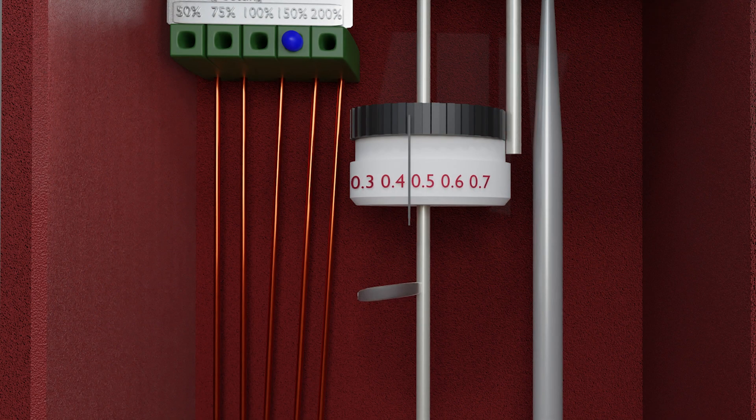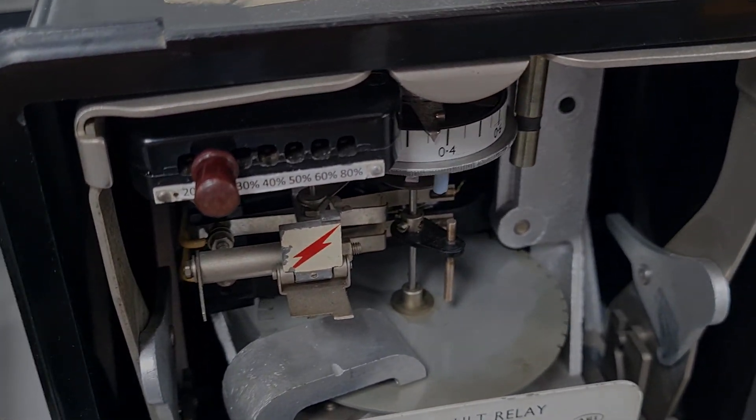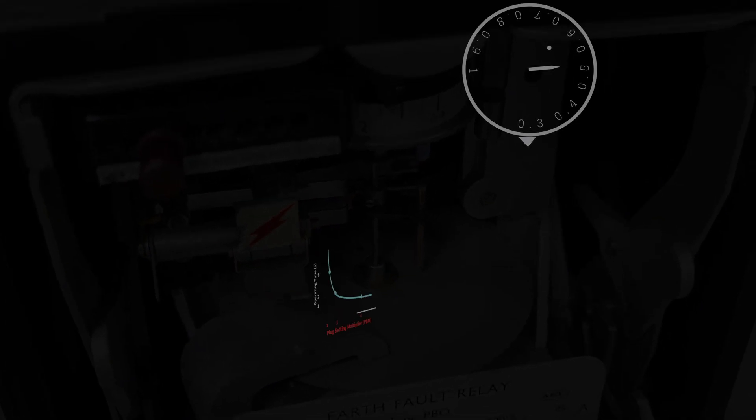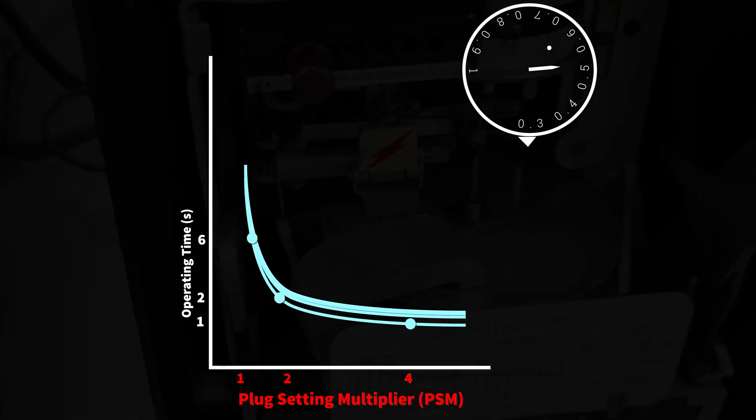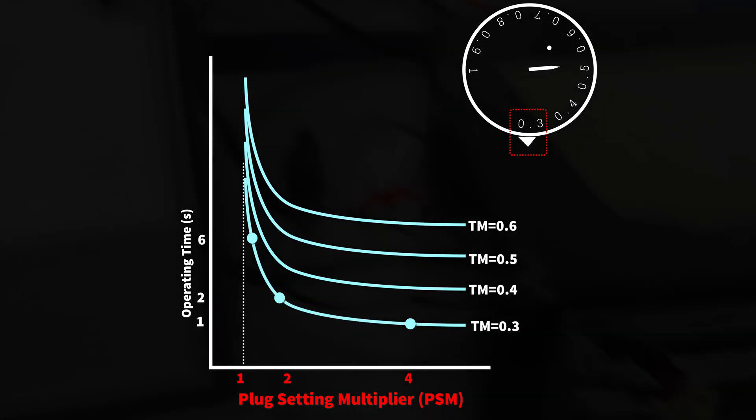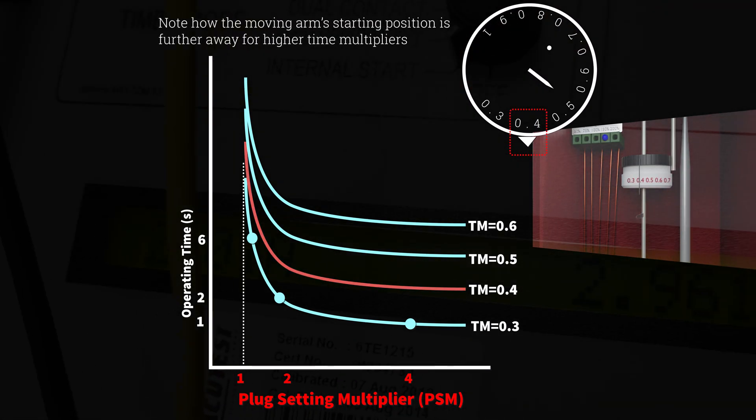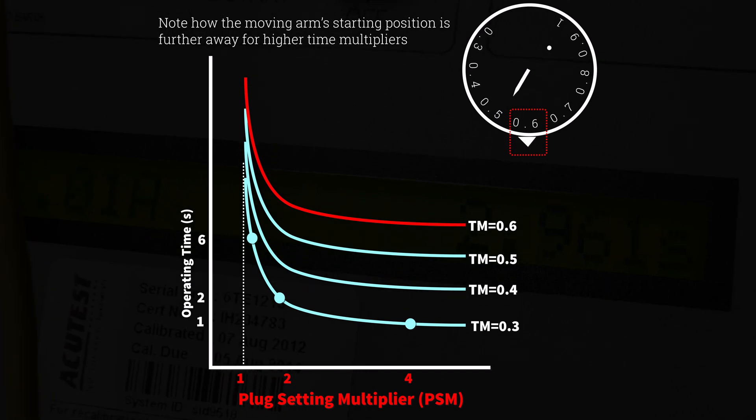The second method to configure the relay is called the time multiplier. This allows the user to change the distance that the rotating arm needs to travel to reach the contact. The ability to do this is a remarkably useful way to set a relay to a particular requirement. For example, the time multiplier setting is a crucial parameter for coordinating the speed at which relays operate. In some cases,